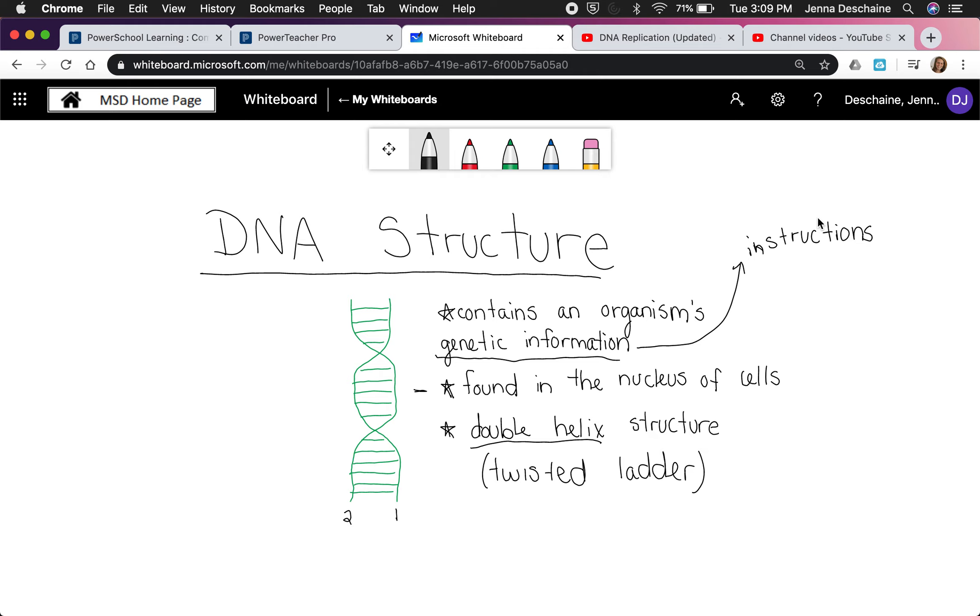Without the DNA, the cells don't really know what to do with themselves. They need that DNA in order to get that genetic information to carry out specific instructions. DNA is found in the nucleus of cells. The nucleus is that part right in the center of the cells, and it contains that DNA. And the last important thing about basic structure is DNA has what we call a double helix structure.